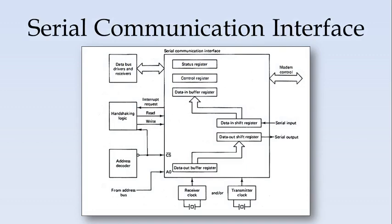Now we see the block diagram for a simple serial communication interface. It contains a status register, a control register, and for receiving serial input it has a data-in shift register whose contents are stored in a data-in buffer register. Similarly for transmitting, it has a data-out buffer register which is sent serially out to the serial output line. Apart from that, it has other interface logic circuits to interface with the processor.